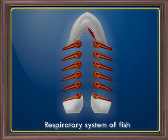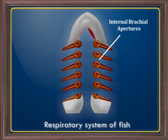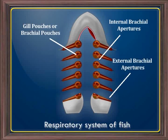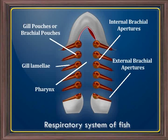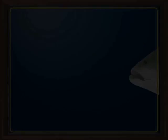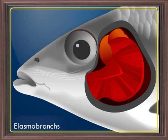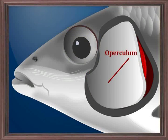Let us now examine the structures present in the respiratory system of fish. It consists of internal branchial apertures, branchial pouches or gill pouches, and external branchial apertures. The internal branchial pouches are connected to the pharynx internally and open to the outside by the external branchial apertures. The gill pouches possess gills covered by a mucous membrane. There are several horizontal leaf-like folds in the gills called gill lamellae, which are richly supplied with blood vessels. In elasmobranchs or cartilaginous fish, the external branchial aperture is visible. In bony fishes or teleostae, the openings are covered by a bone called the operculum.